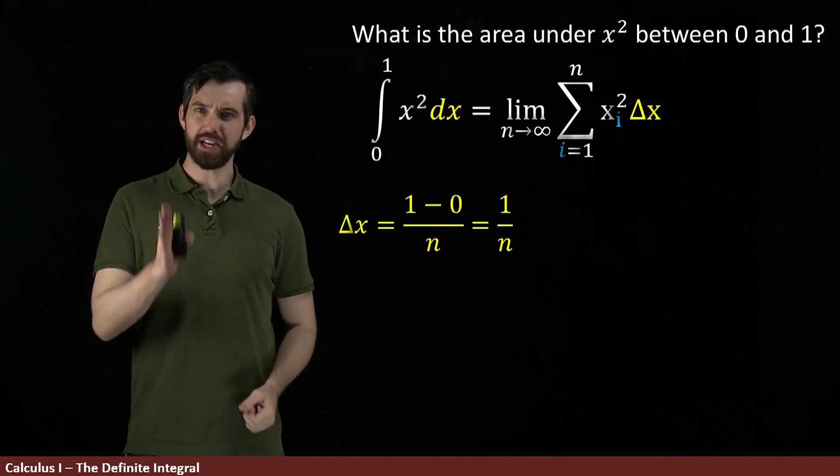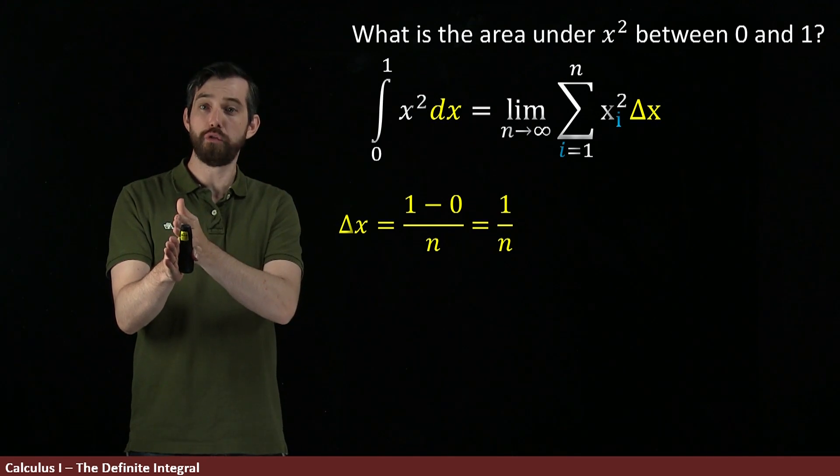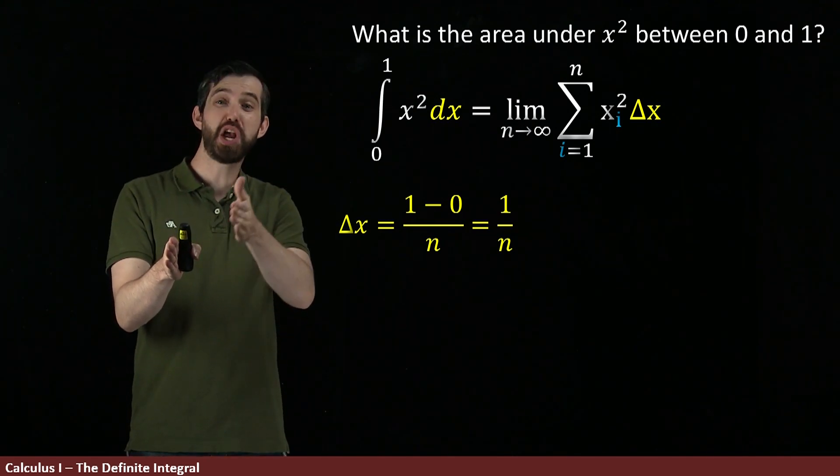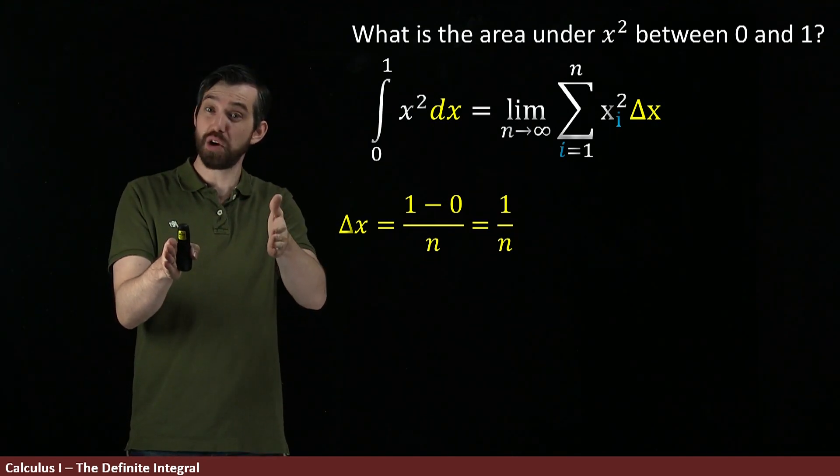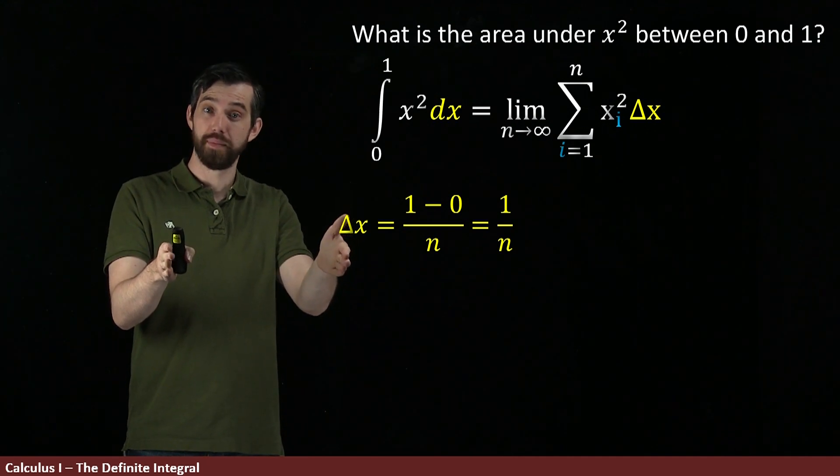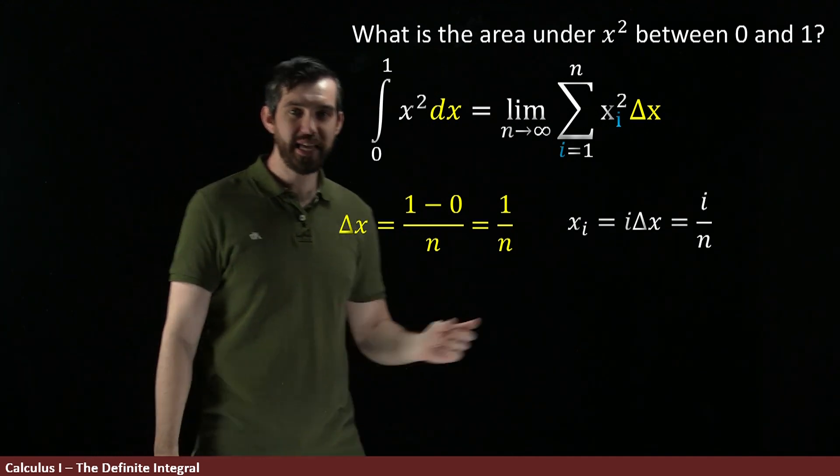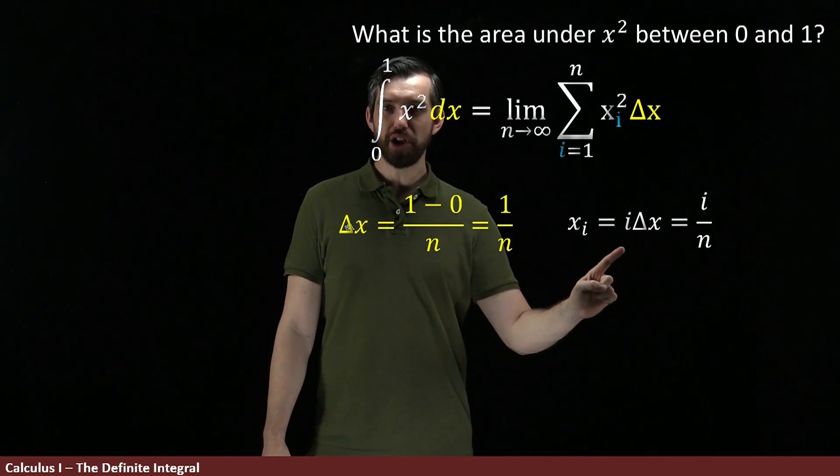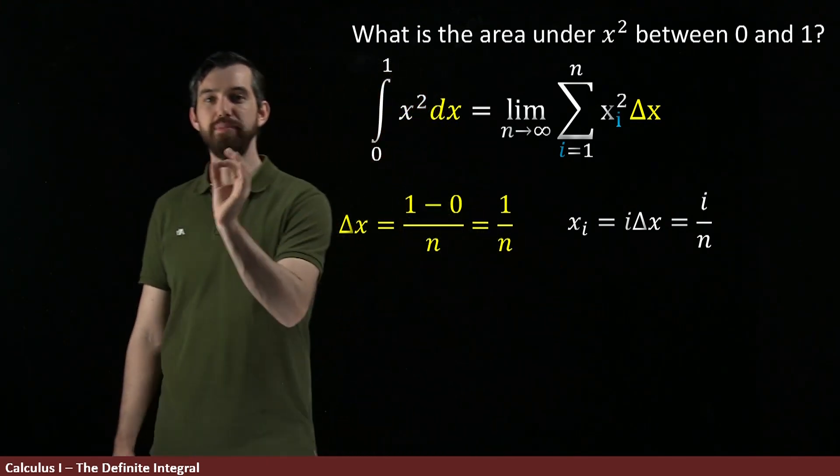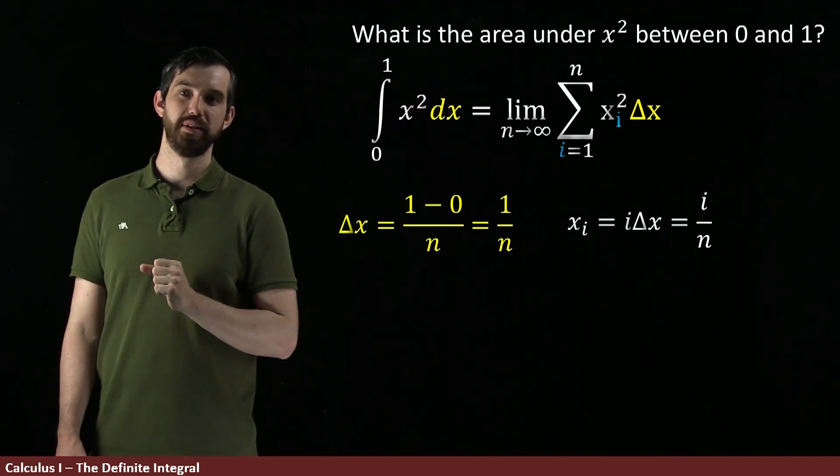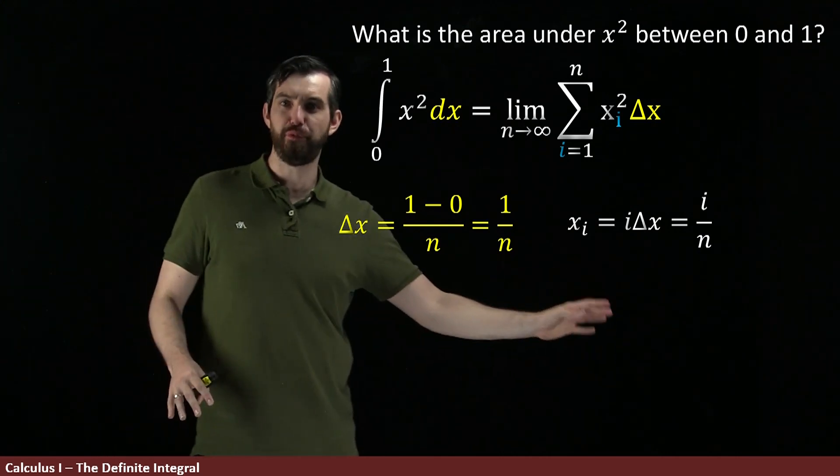And the way I want to think about this is I start at 0, and then I go over 1 width, 1 over n, and then I go over 2 width, 2 over n, then I go over 3 width, 3 over n. And in general, what I'm going to say is that my xi is I go over i amounts times whatever that delta x was. Let's test to see if this formula makes sense.